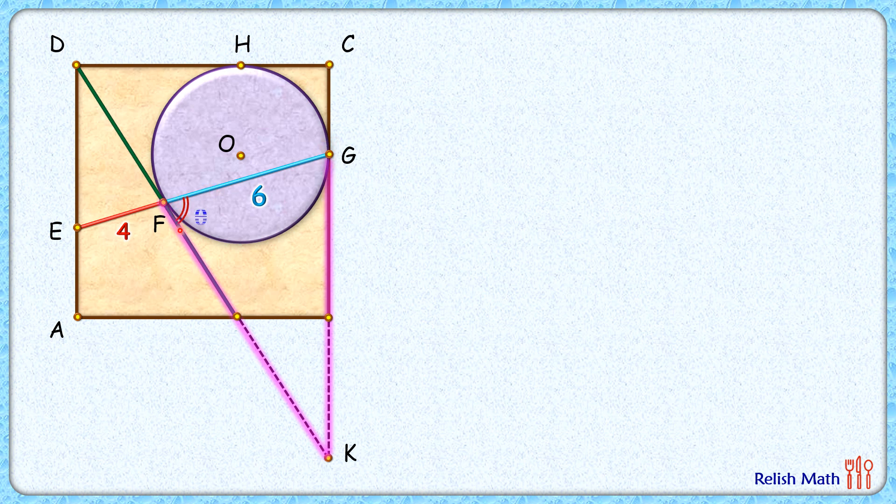Thus these angles will also be equal - that's theta degrees. This angle, yes, vertical opposite angle, so this has to be theta. And this angle here, if you look carefully, DA and CK are parallel lines, GE is transversal, and these angles are alternate interior angles, so this has to be theta degrees.